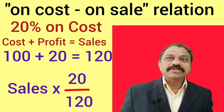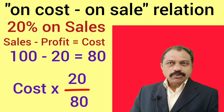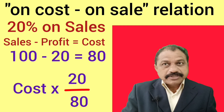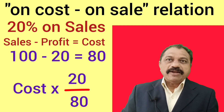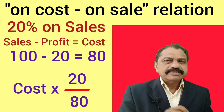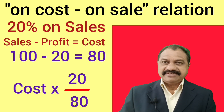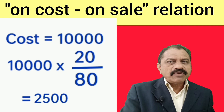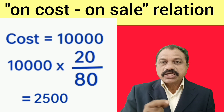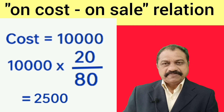Example number three. Suppose cost price is 10,000 and profit is 20% on sales. Calculate sales price. Since profit is 20% on sales, 100 stands for sales. Let the sales price be 100; then sales minus profit equals cost — 100 minus 20 equals 80. Cost price is given as 10,000. Therefore profit is equal to cost multiplied by 20 divided by 80, which equals 2,500.